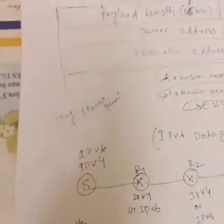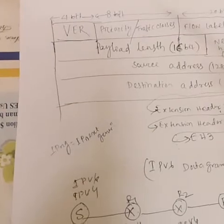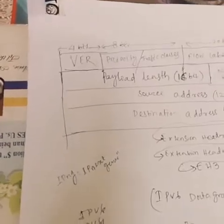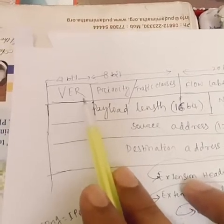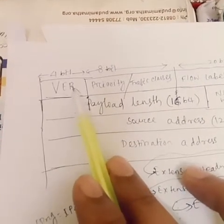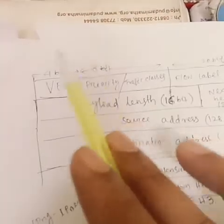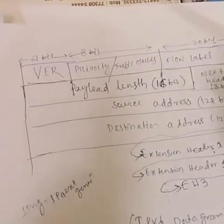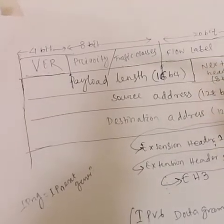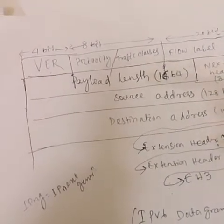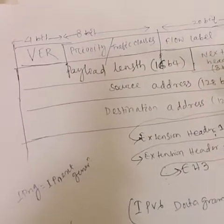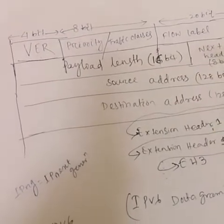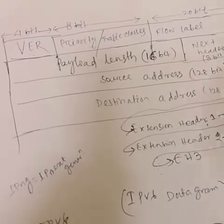In the IPv6 header, first we will discuss about the version field. This is a 4-bit field and it indicates what type of version it is. Since we are in the transition from IPv4 to IPv6, both software versions are still existing. Some routers have only IPv6 software, some have IPv4, and some have both IPv4 and IPv6 software.